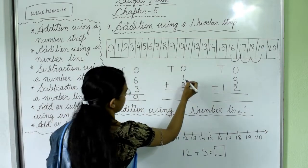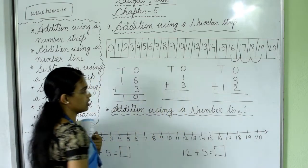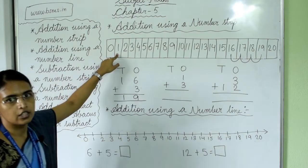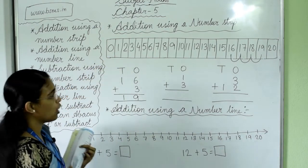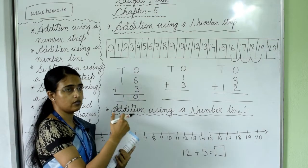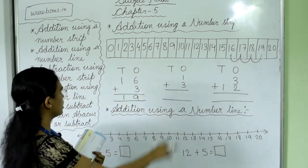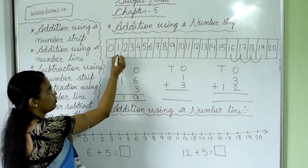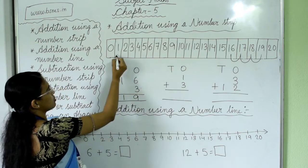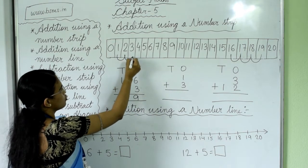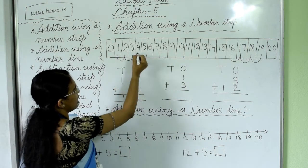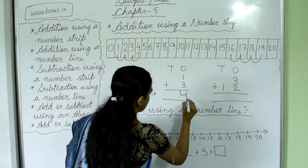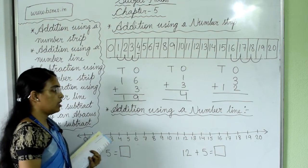Next question is 1 plus 3. Where is 1? It is here. We have to add 3 numbers. How many steps do we take from 1? Three steps forward. You are standing on number 1, and you take 3 steps: 1, 2, 3. You reach number 4. So 1 plus 3 equals 4.